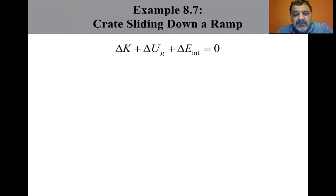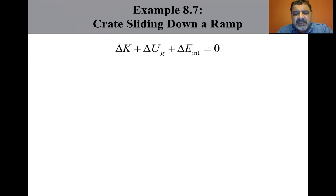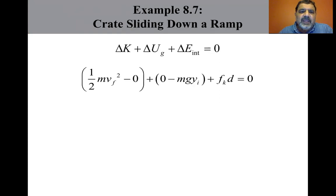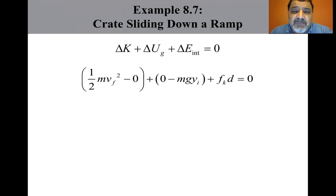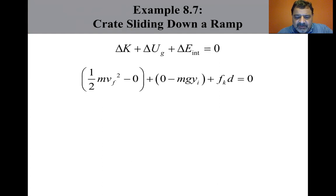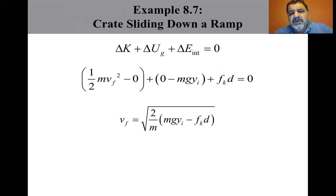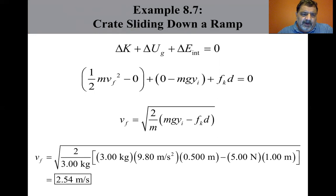Write the conservation of energy equation: delta K plus delta U_G plus delta E_internal equals zero — that is, the change in kinetic energy plus the change in potential energy plus the change in internal energy equals zero. Substituting: kinetic energy was zero at the top and all velocity at the bottom; potential energy was maximum at the top but zero at the bottom; plus the force of kinetic friction times the distance equals zero. Solving for V, we get 2.5 meters per second.